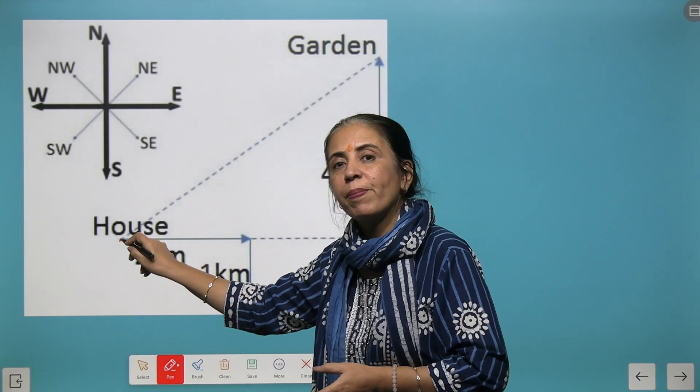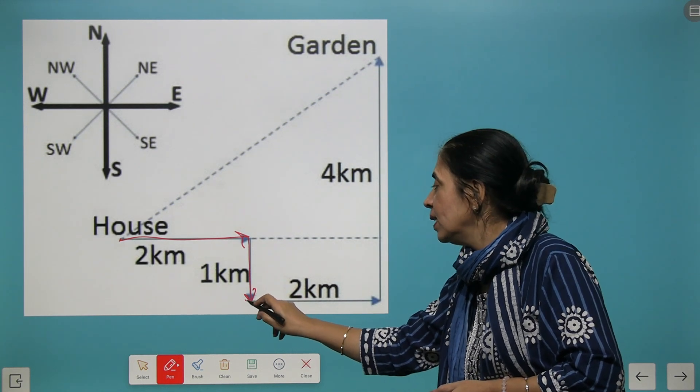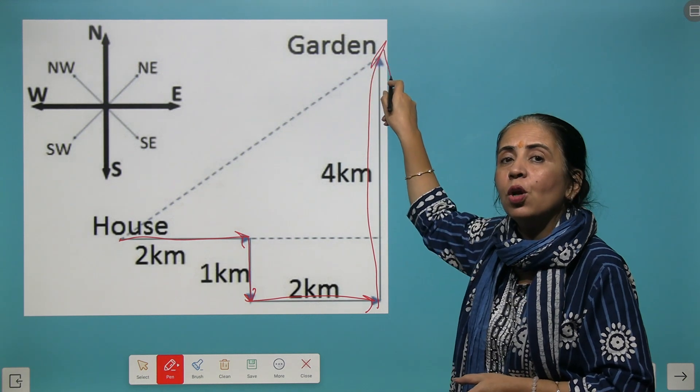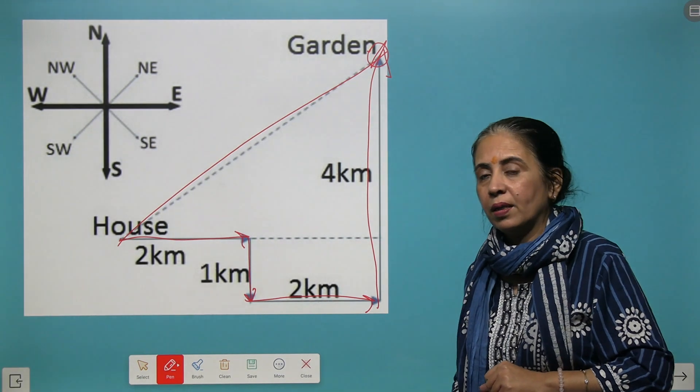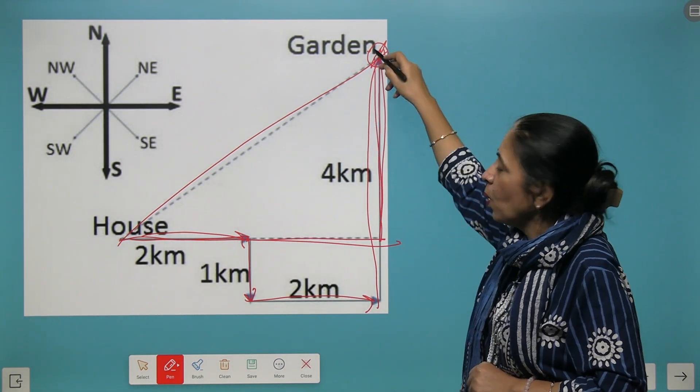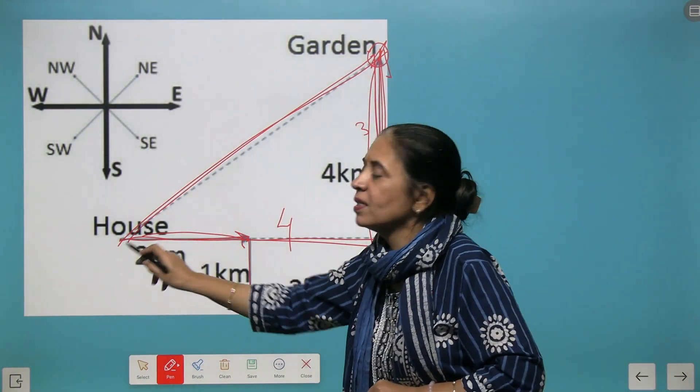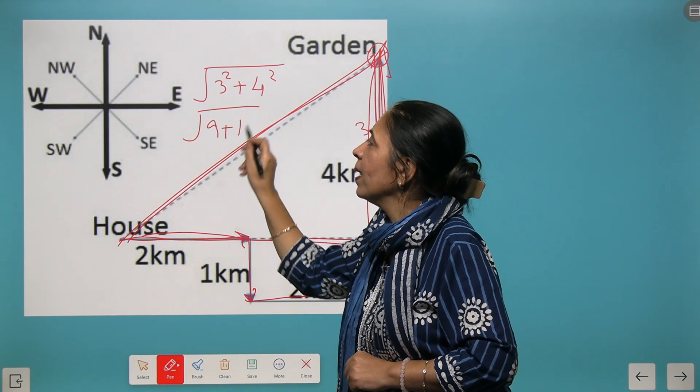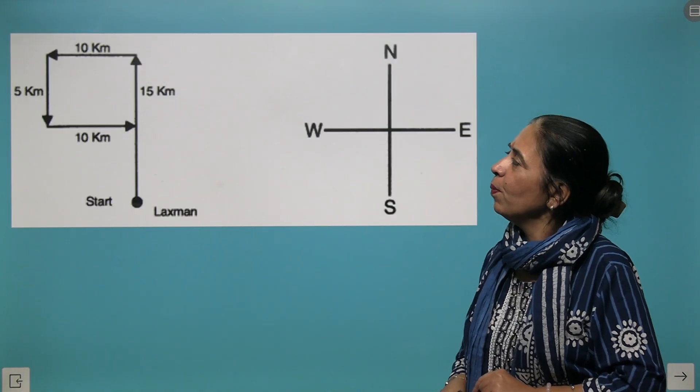Let's look at this question. This is the house of a person. He first moves 2 kilometers towards east, then 1 kilometer towards south. Further, he turns right and moves 2 kilometers more towards east, then 4 kilometers towards north, and here we have a garden. The question is: find the distance between the garden and the house. We check this total length: 2 kilometers plus 2 kilometers equals 4. And here, this is not 4 but 4 minus 1, so this is 3. We need to find this distance. It will be square root of 3 squared plus 4 squared, which is 9 plus 16, square root of 25, which equals 5.